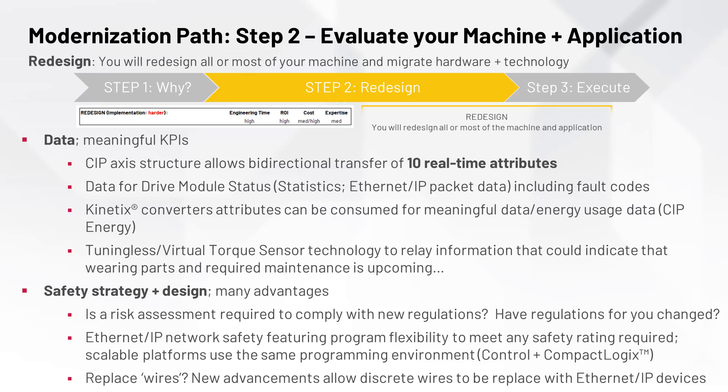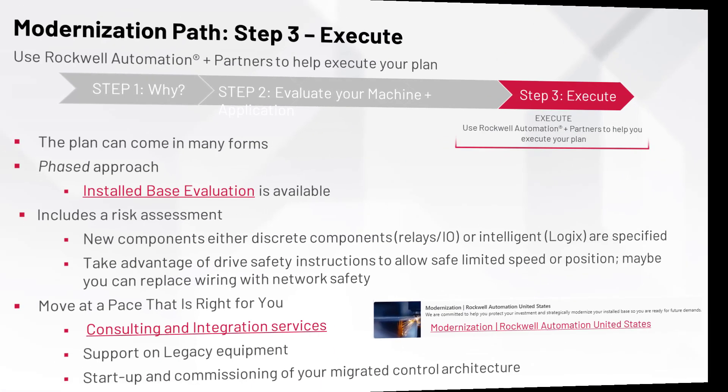Talking about safety is much easier today. Newer safety devices allow for the replacement of discrete wiring — in many cases, traditional sensor wiring can be replaced with an EtherNet/IP connection. Have safety regulations for your machine changed? Does your application require a risk assessment to comply with new regulations? Rockwell Automation can help. We offer services and application techniques to show how the technology works together to achieve various safety ratings.